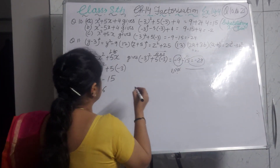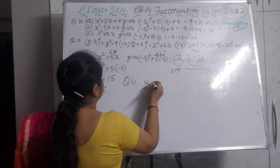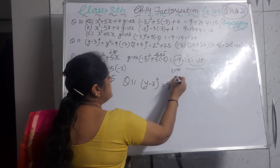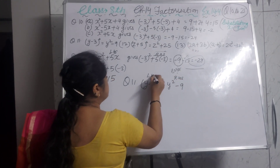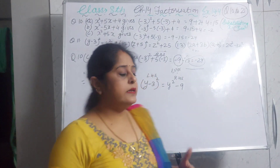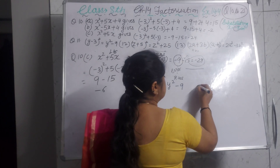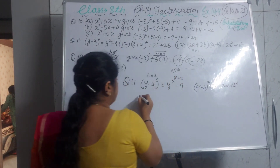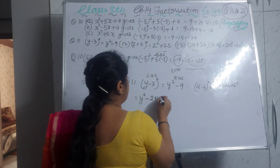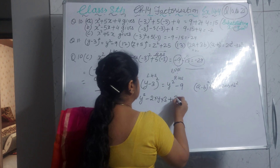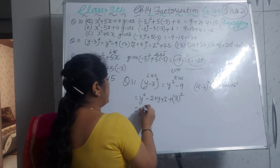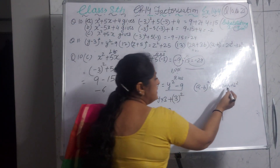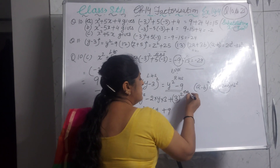Now question number 11: (y minus 3)² is set equal to y² minus 9 on the right hand side. We solve the left hand side using the identity (A minus B)² = A² minus 2AB plus B². This gives y² minus 2y×3 plus 3², which equals y² minus 6y plus 9. The error is they did not use the identity and the middle term minus 6y is missing.